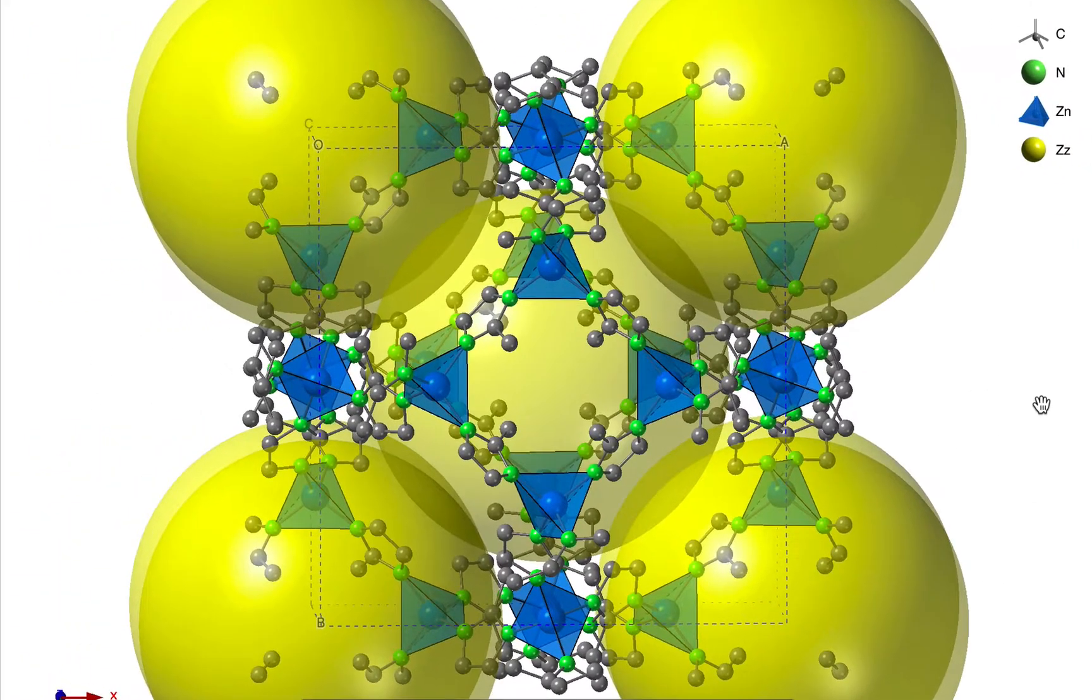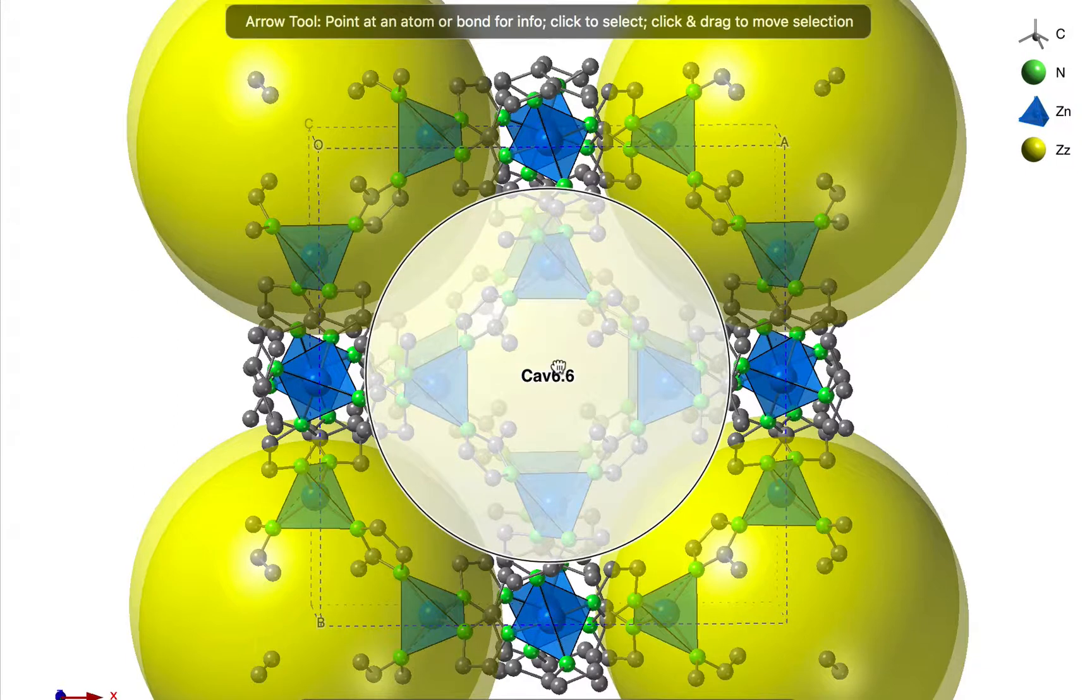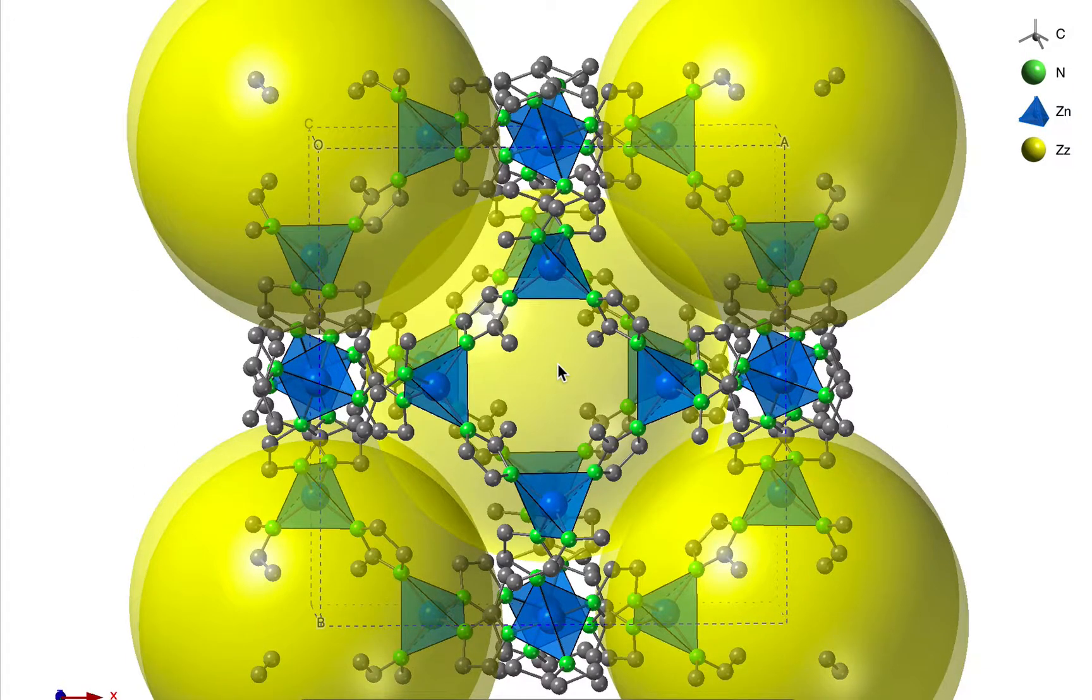Now we have the correct size. The next thing I'm going to do is isolate one cavity and the surrounding atoms. I'm going to use the arrow tool and click on the cavity atom to select it.